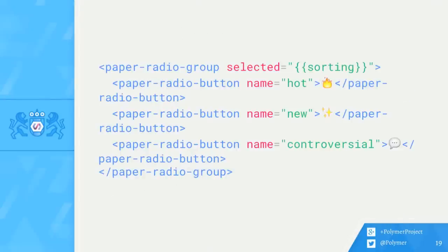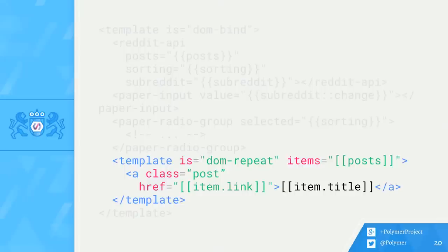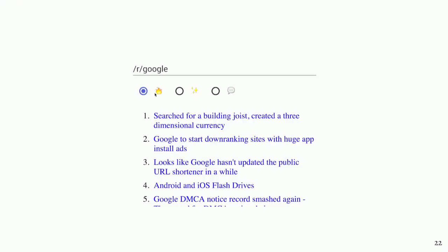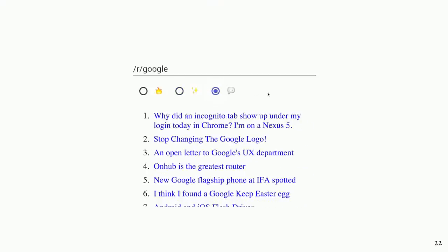The next element is our radio group — straight up a radio group with radio buttons for the sortings. And lastly, the most interesting part of the front-end is a dom-repeat. We use the Reddit API element to give us the posts via two-way binding, and pass that in as a one-way binding to the dom-repeat, which renders all the titles of the posts in the current subreddit with anchor links. This should not look complicated anymore — it's kind of straightforward. We built an app that reacts immediately to user changes without any bookkeeping of our own. That is the power of two-way bindings: no extra wiring required.